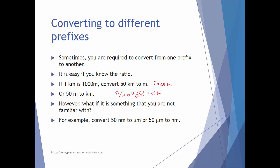However, what if you are not very familiar with the prefix? Even though the ratio may follow the same logic, for example if you want to convert 50 nanometers into micrometers, or 50 micrometers back to nanometers, or eight gigawatts into kilowatts, or 80 kilowatts back into megawatts — these can be quite a challenge if you don't know the ratio.